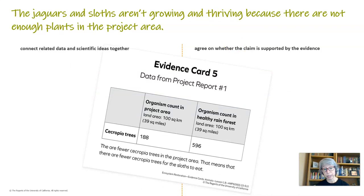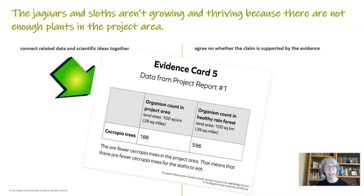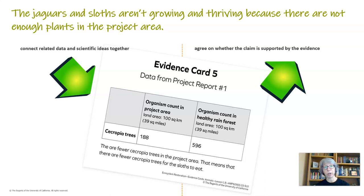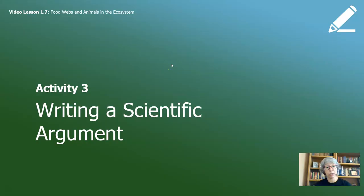There are also fewer cecropia trees in the project area, meaning fewer cecropia trees for the sloths to eat. These ideas weave together the data and what we know, supporting our claim: with fewer cecropia trees in the project area there is not enough food matter for the sloths, and if there's not enough food matter for the sloths, the jaguars can't thrive.